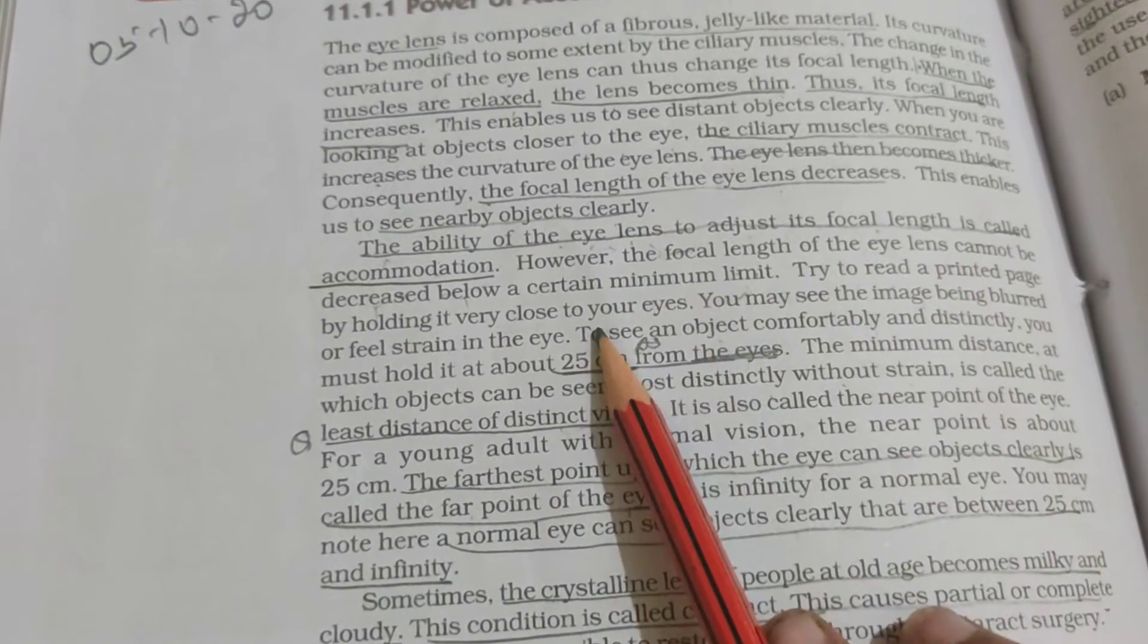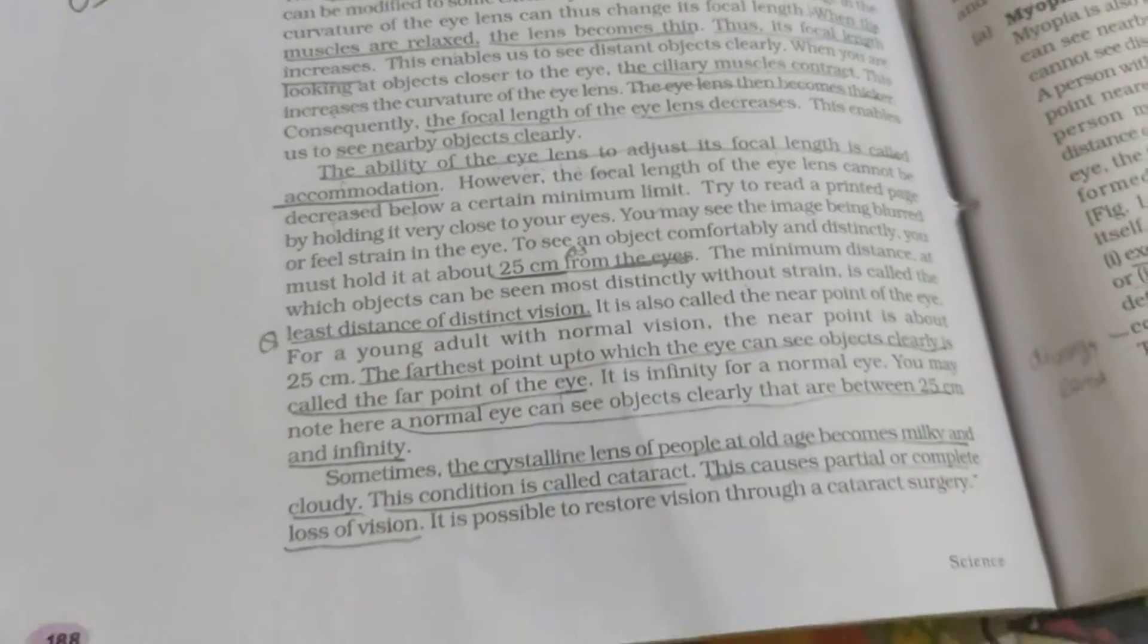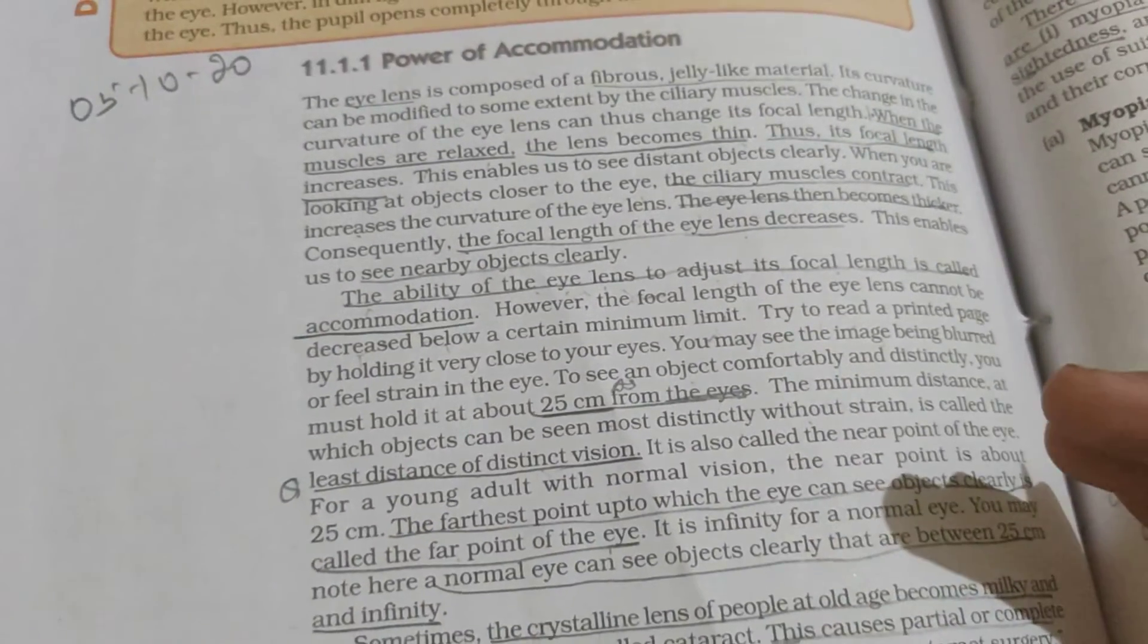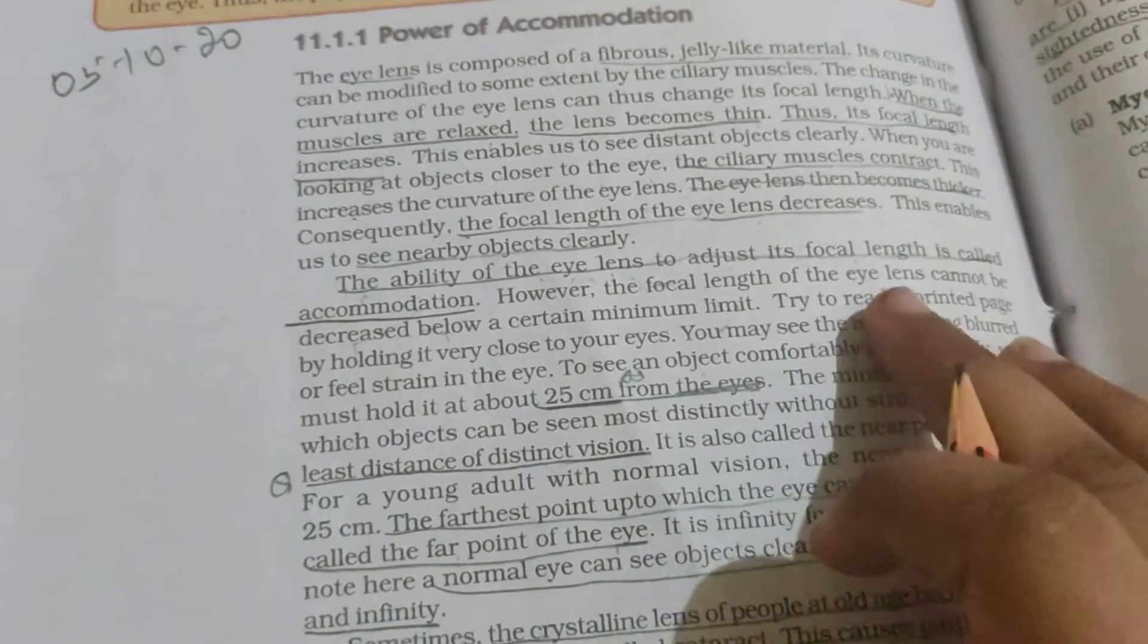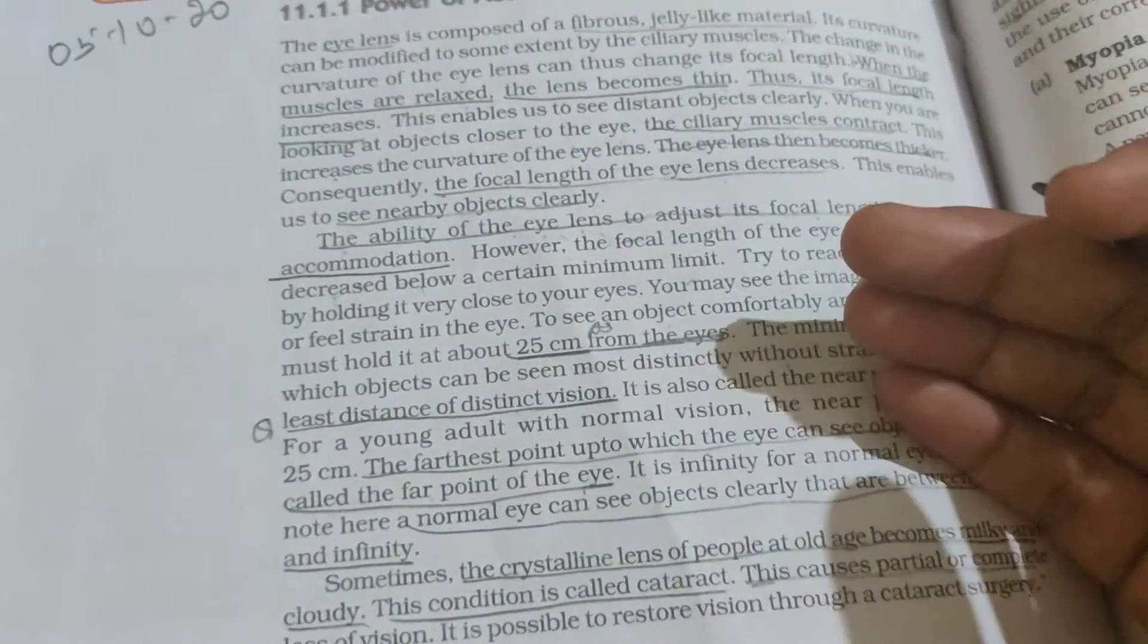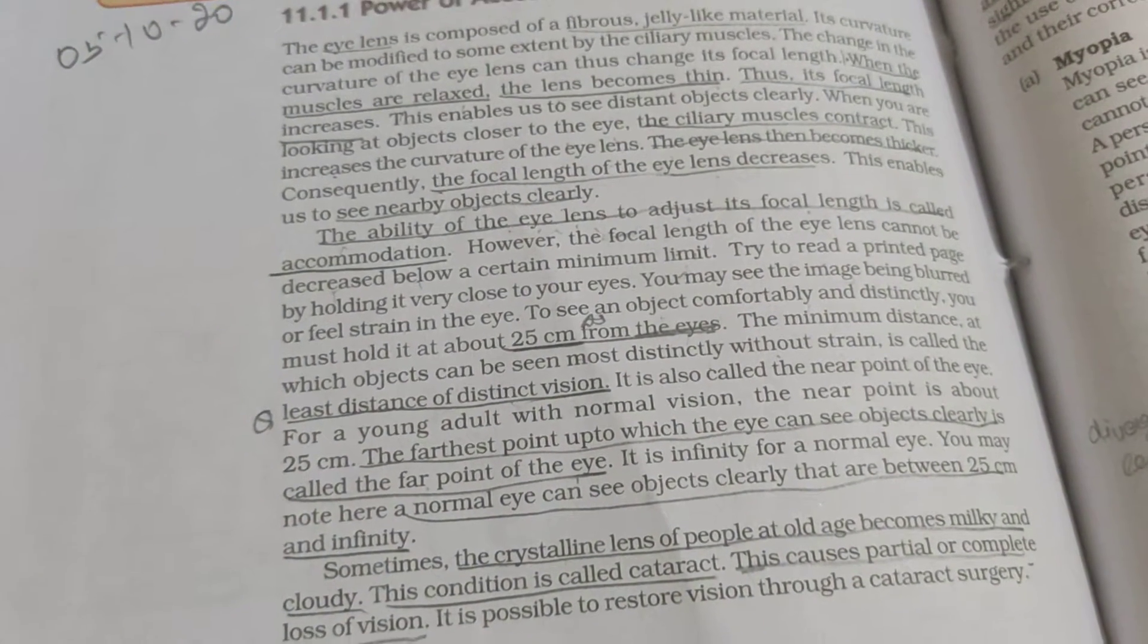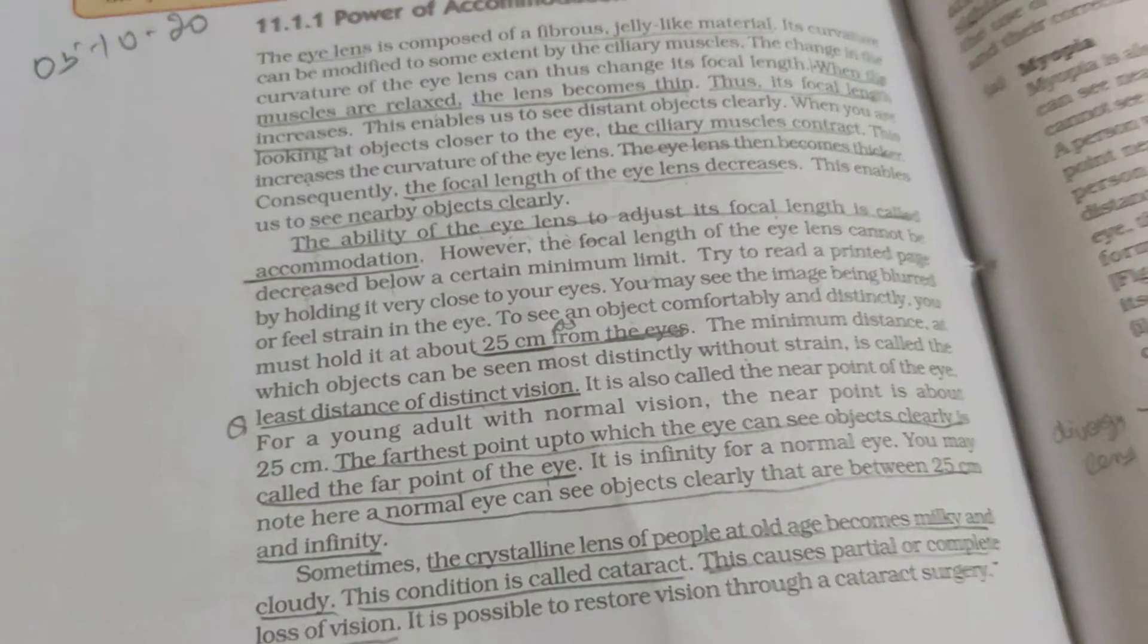The focal length of the eye lens cannot be decreased below a certain limit. It doesn't mean that it goes to zero. Try to read a printed page - if you hold it very close to your eye, it will be blurred.